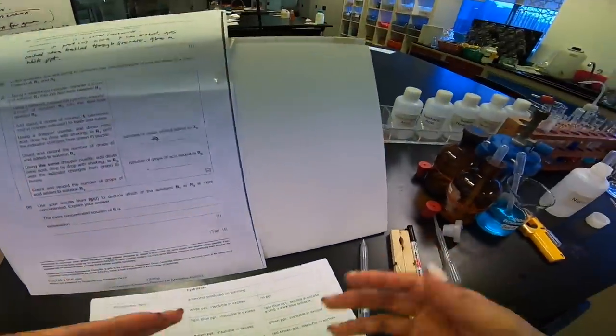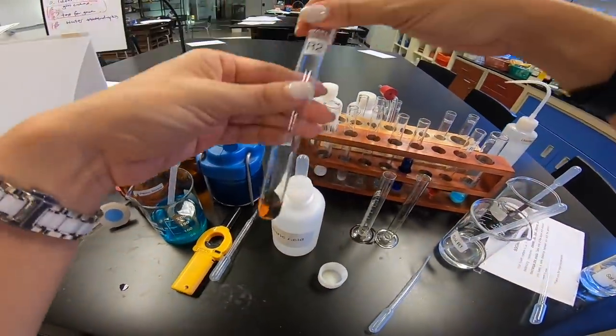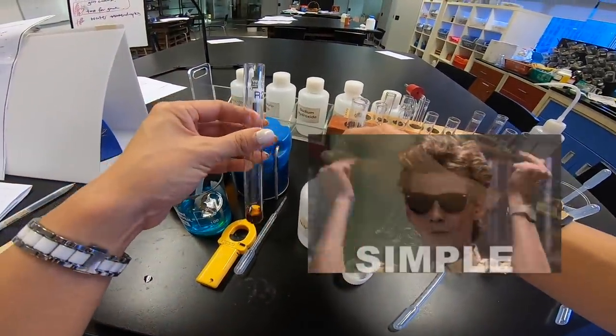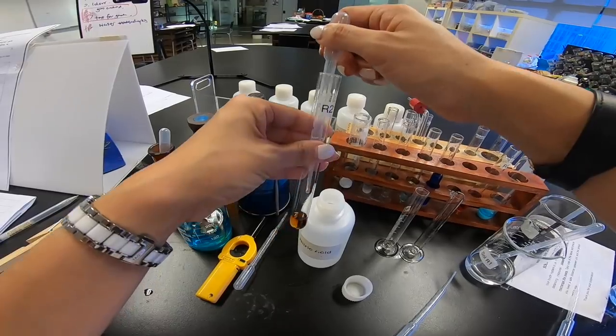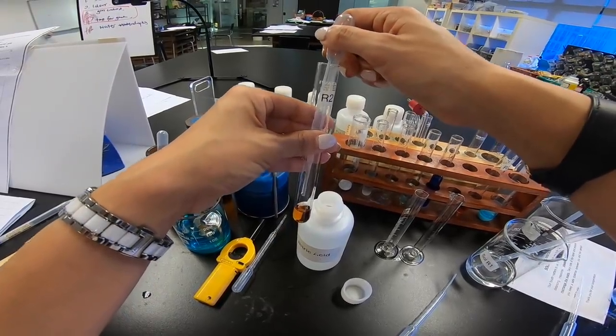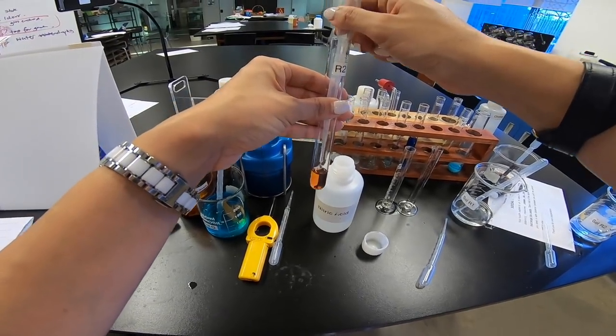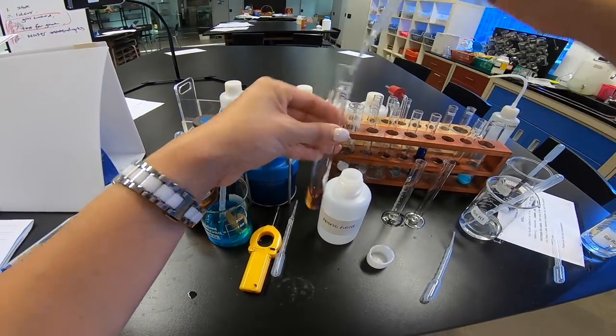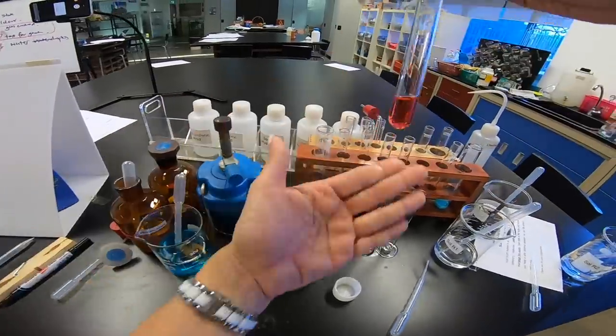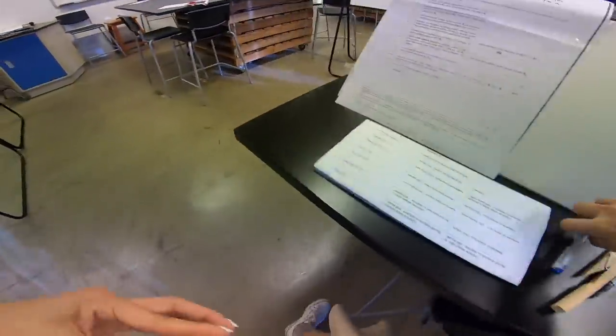Well, we're going to repeat for R2. This is quite a good experiment. Easy, peasy. You just need to count the number of droplets. Quite fun, right? Okay, let's go. 1, 2, 3, 4, 5, 6, 7, 8, 9, 10, 11, 12, 13, 14, 15, 16, 17, 18, 19, 20, 21, 22. Whoa! 22, it changed! Okay! So, I'm going to write down 22.